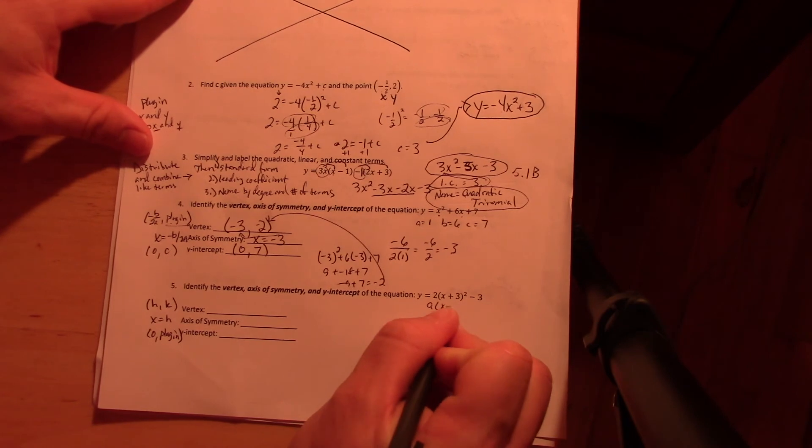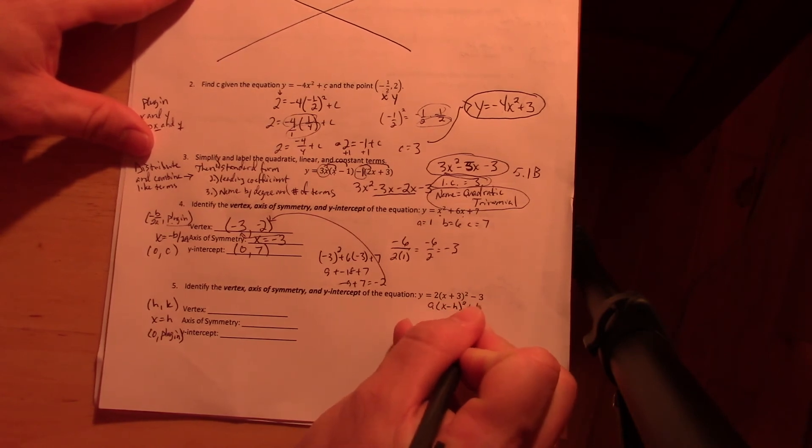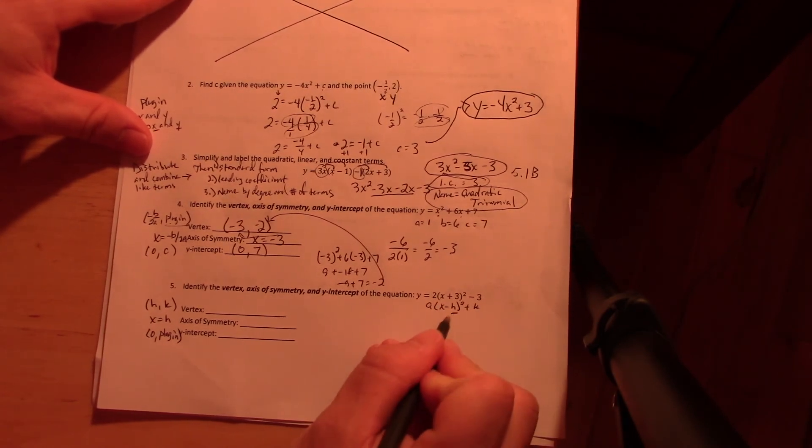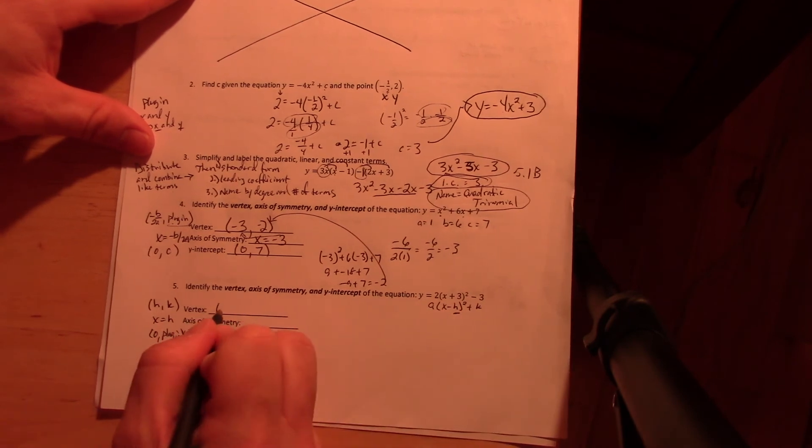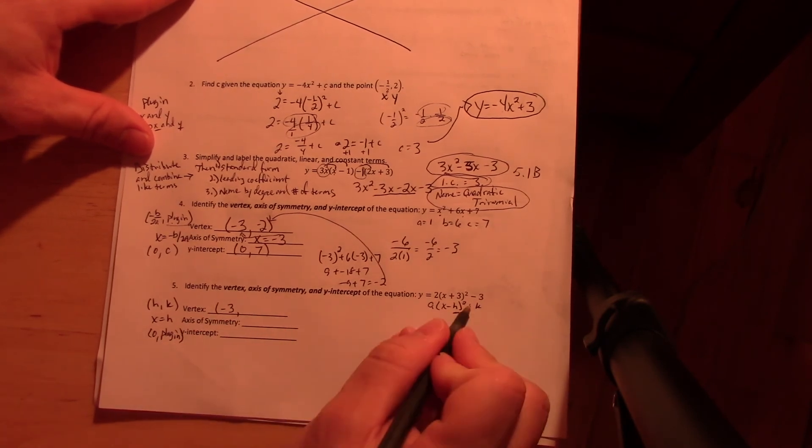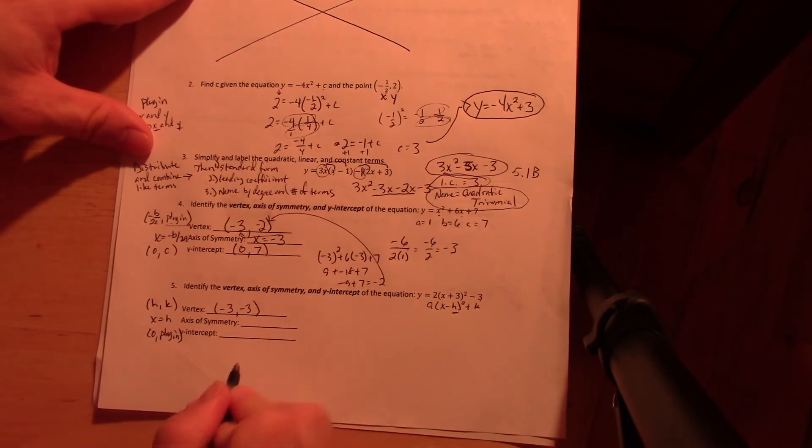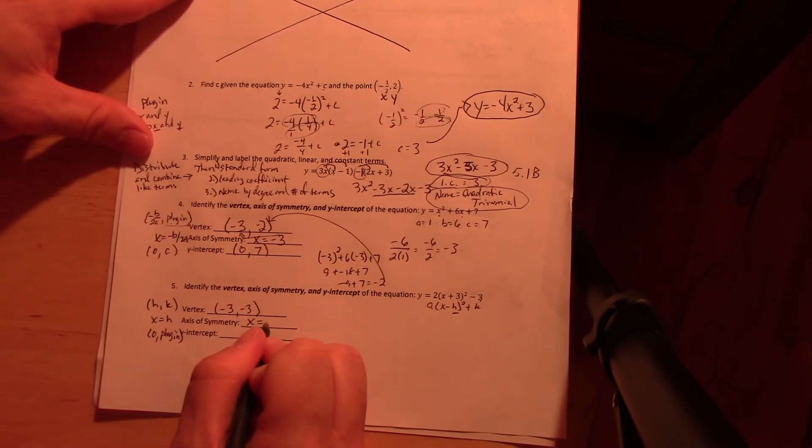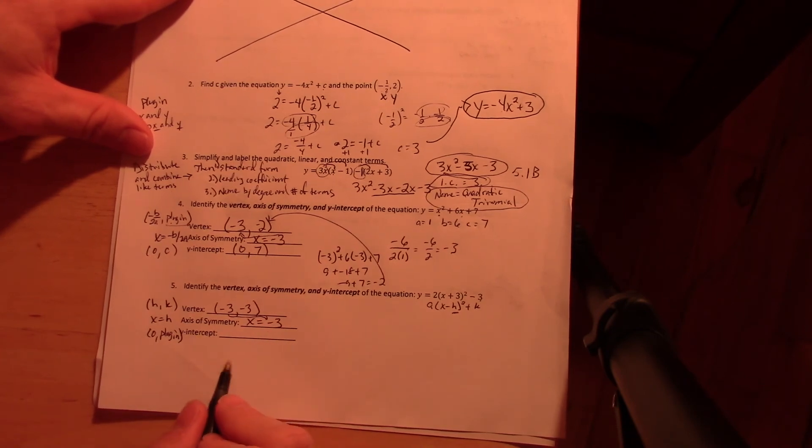Now for number five, this is really easy if you realize that this is in this form. So my H is always the opposite of what's on the inside here, so my vertex is negative 3. And my K is always the same as what's out here: negative 3. My axis of symmetry is X equals, and it is always, always, always the X value of the vertex.